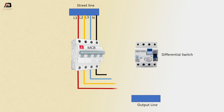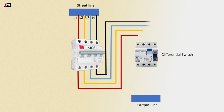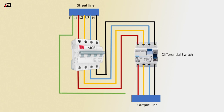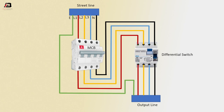Phase and neutral connection output from MCB to connect differential switch. Phase and neutral connection from differential switch to output line — the connection to output line. Now this circuit is ready.